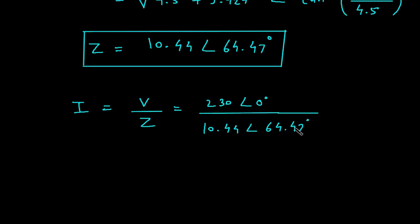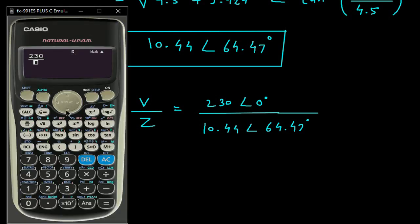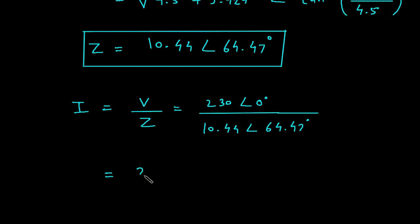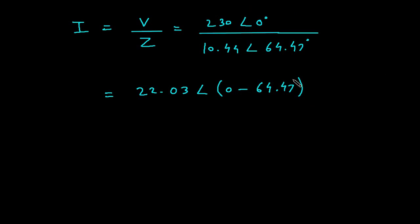Solving the division: 230 / 10.44 = 22.03, and the angle is 0° − 64.47° = −64.47°. Therefore, the current I = 22.03 ∠ −64.47° Amperes.